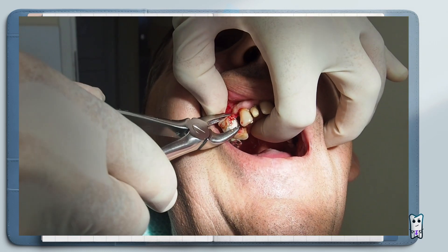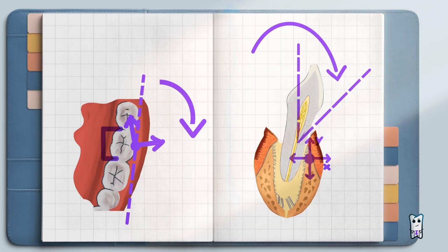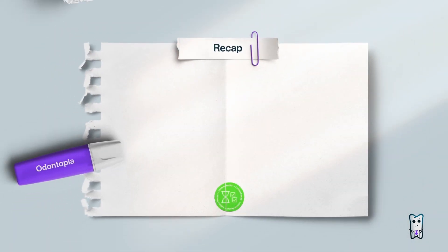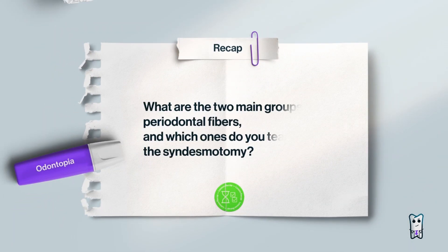When the tooth is out, it's really important to clean it well and check for fractures of the root. Only then you can approach wound care. Okay, let's recap: what are the two main groups of periodontal fibers and which ones do you tear with the syndesmotomy?